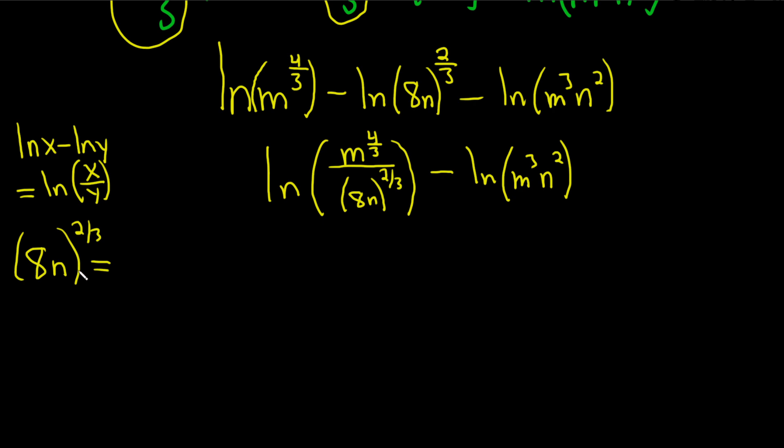Properties of exponents say you raise each piece to the two-thirds power. So this is 8 to the two-thirds n to the two-thirds. How do you deal with 8 to the two-thirds? Well, this number here on the bottom of three always goes in a little pocket like this. So there's our three.